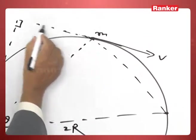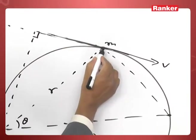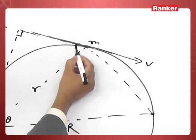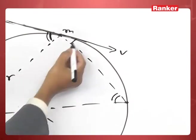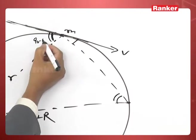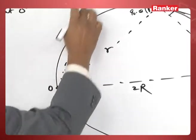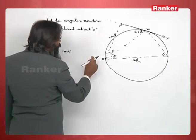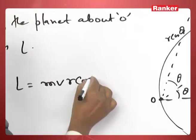You see this velocity vector is tangent to this circle here. This angle is equal to this angle by alternate segment theorem, and this angle is equal to this angle. So this is theta, this is 90 minus theta. This angle becomes theta. So if this is r we will get this as r cos theta. We have angular momentum about O is mass times velocity into perpendicular distance, that is r cos theta.